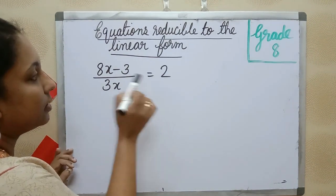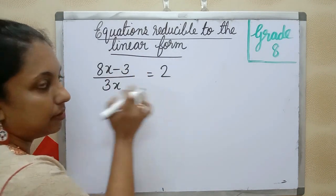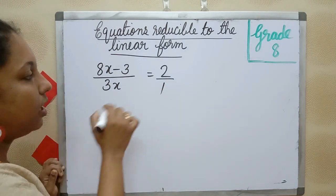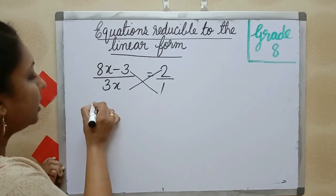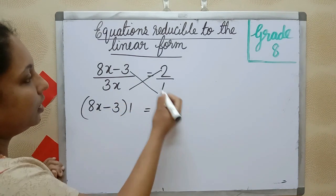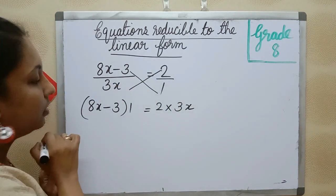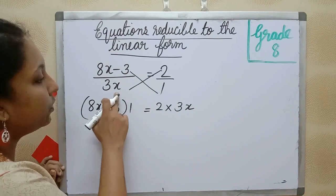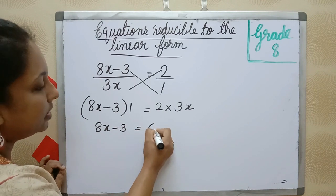8x minus 3 by 3x is equal to 2. First you have to cross multiply. Numerator 2, denominator is 1. Cross multiplication is the easy method. That is 8x minus 3 into 1 is equal to 2 into 3x. That is 8x minus 3 is equal to 6x.